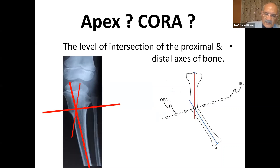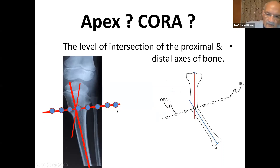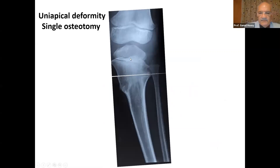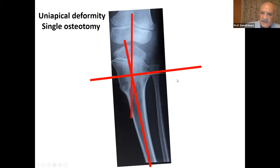They meet each other in the middle; we draw the transverse bisecting line, and any point here is the CORA. If we have a uni-apical deformity — a single osteotomy will be enough to correct the deformity. This is a uni-apical, metaphysial deformity. You have the apex, the axis of the proximal segment, the axis of the distal segment, the transverse bisecting line, and the CORA lies here. If we do our osteotomy here, this will be enough to correct the deformity.